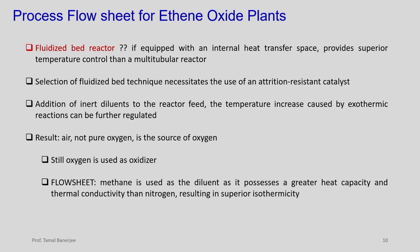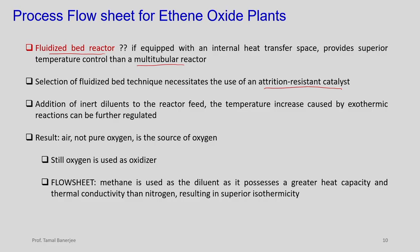A fluidized bed reactor equipped with internal heat transfer provides superior temperature control over a multi-tubular reactor. However, the fluidized bed technique requires an attrition-resistant catalyst, and catalyst attrition remains a problem along with pressure drop concerns. Adding inert diluent to the reactor feed can further regulate the temperature increase caused by exothermic reactions.